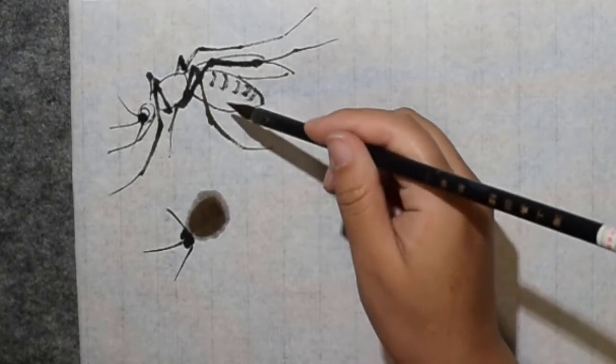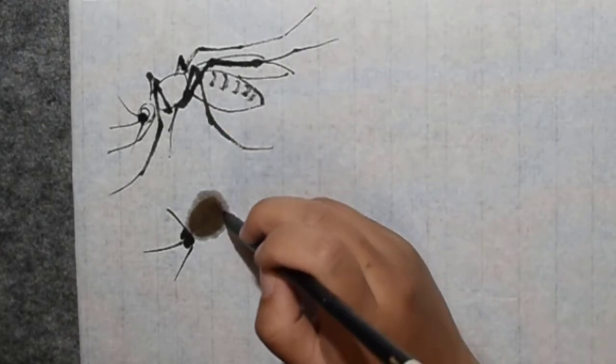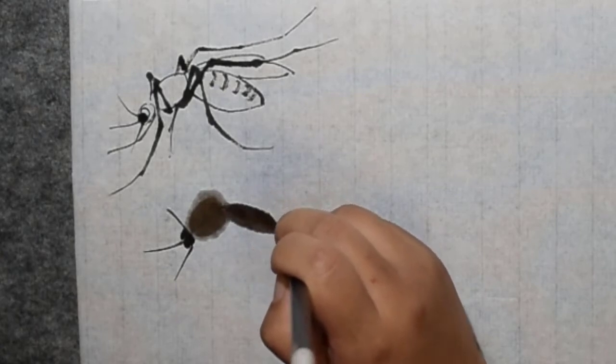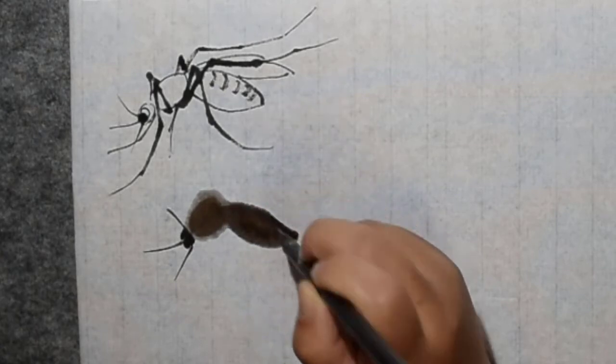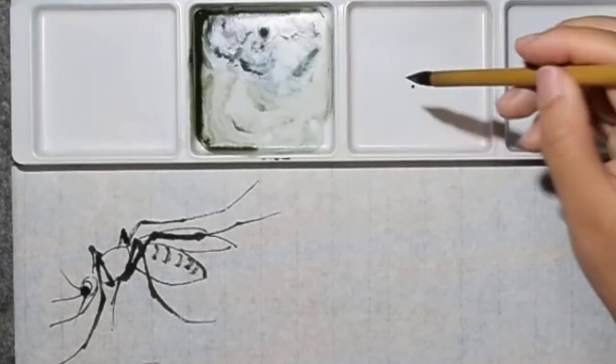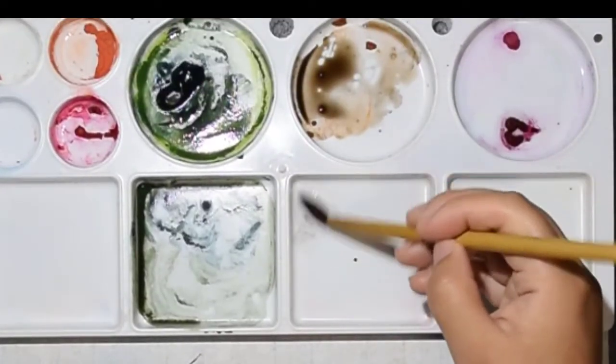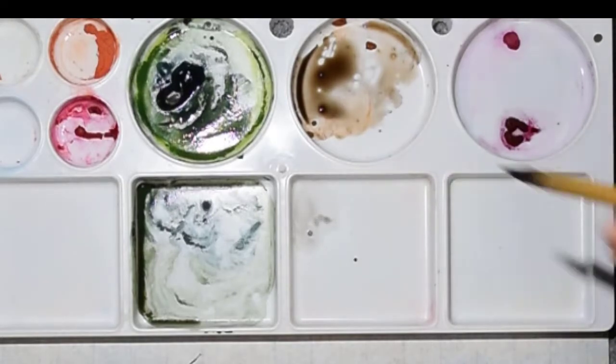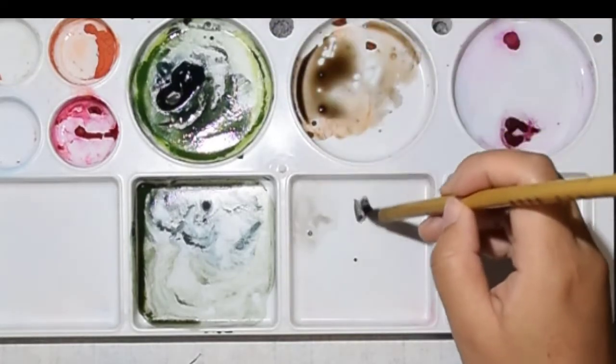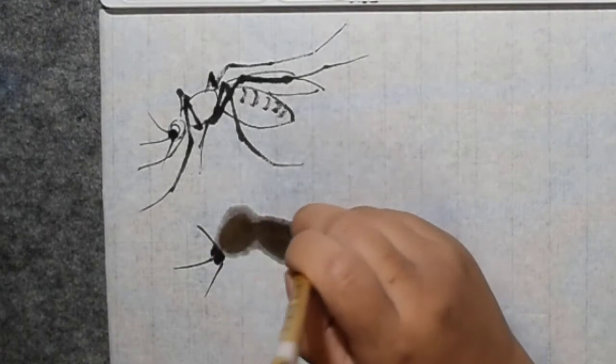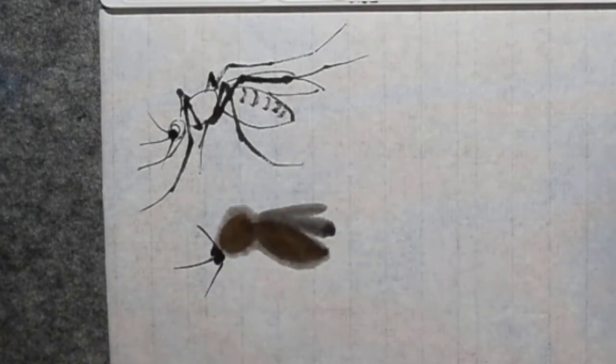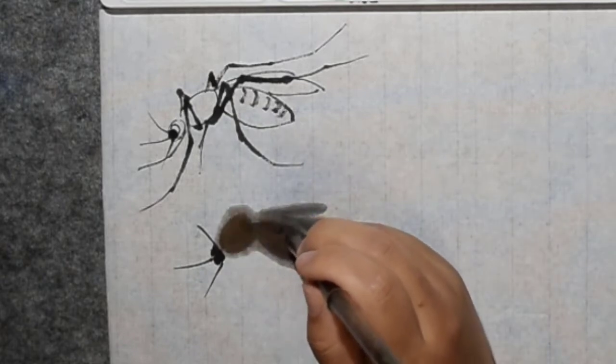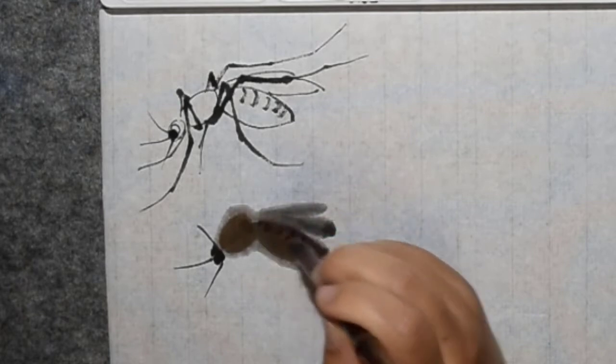This part is the abdomen. And the wing. Wing uses lighter ink. On the tip have a little bit more ink, okay. From outside go inside, like this, this way, this way. This is the wing, and there's some pattern on top of the abdomen.